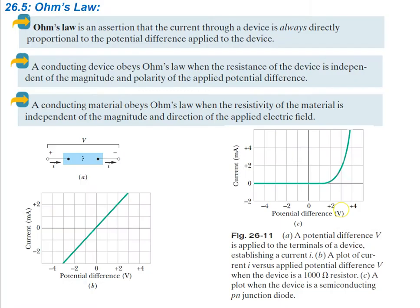Now, Ohm's Law — we mentioned this earlier. Ohm's Law is the assertion that the current through a device is always directly proportional to the potential difference applied to that device. It's written as V = IR, expressing this direct relationship between current and potential difference.